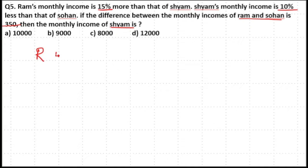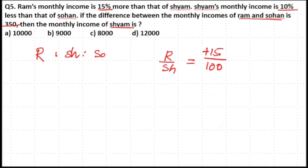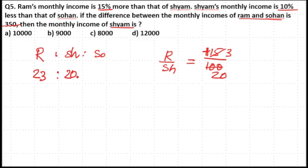We have Ram, Shyam, and Sohan. Ram's monthly income is 15% more than that of Shyam. 15% means 15 by 100. If Shyam's salary is 100, Ram's salary will be 15 greater than 100. Simplifying the ratio: 5 into 3 is 15, 5 into 20 is 100. So if Shyam's salary is 20, Ram's salary will be 20 plus 3, that is 23. So Ram is 23 and Shyam is 20.